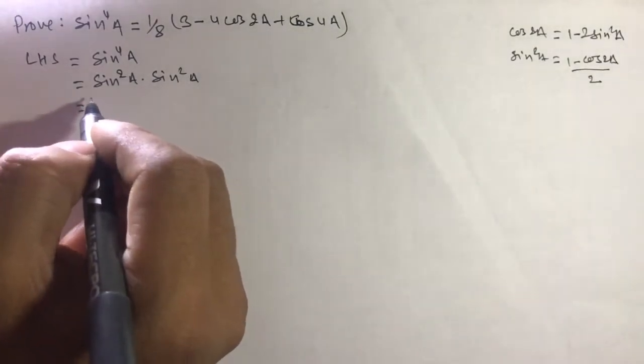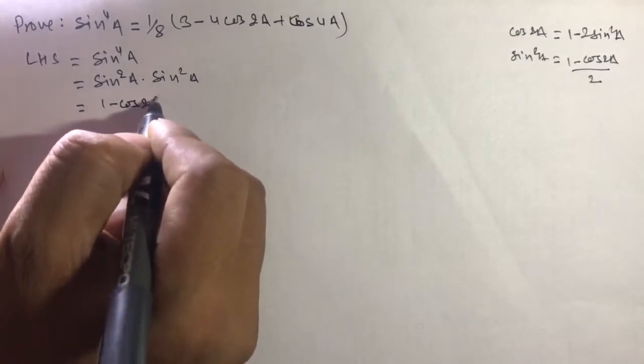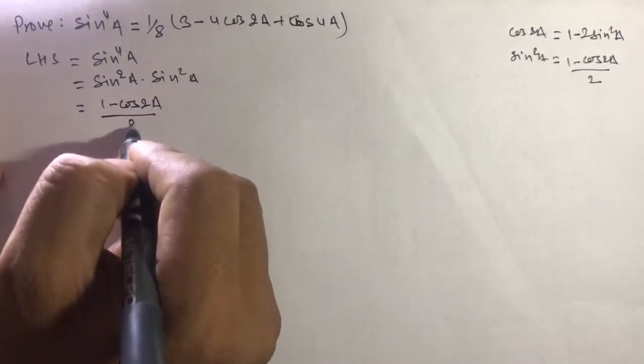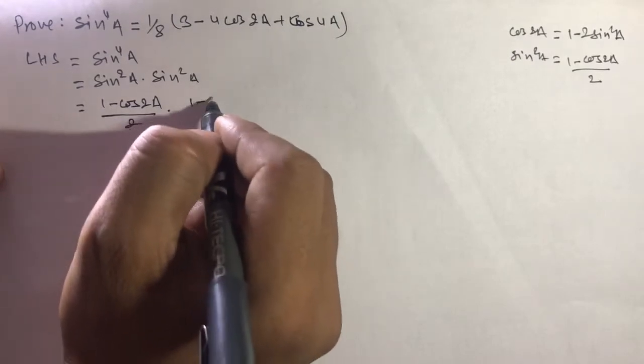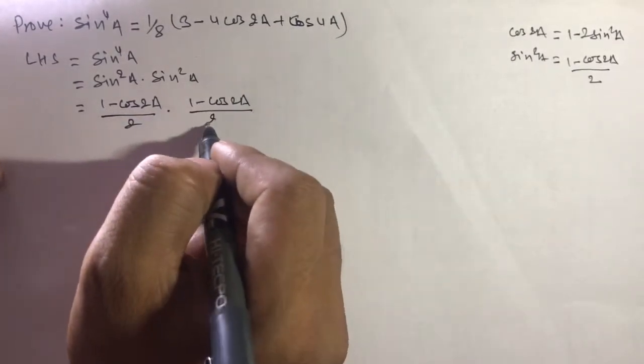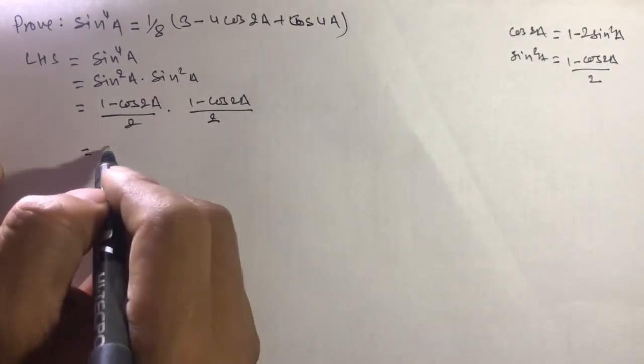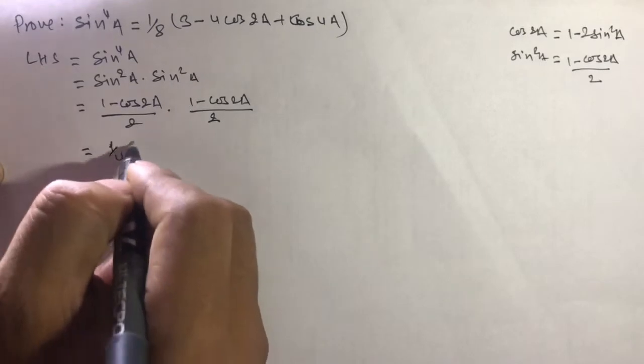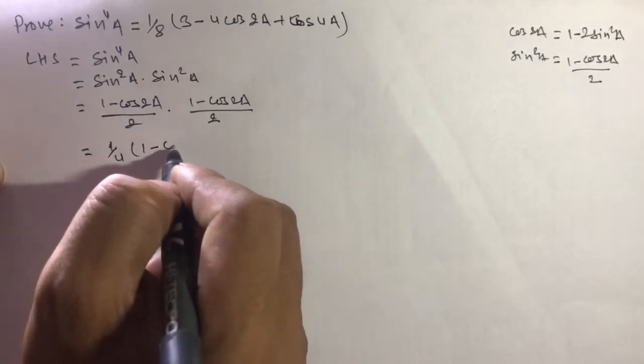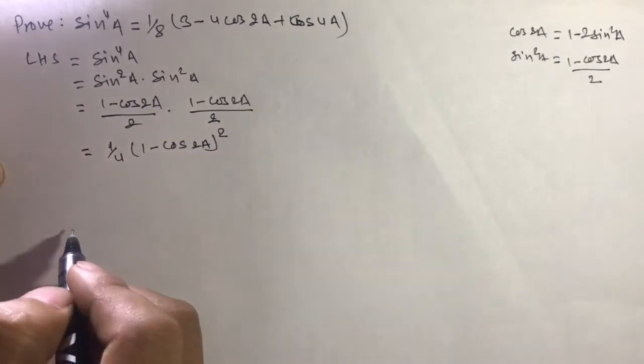Then we can write sin²a as (1 - cos 2a)/2 times (1 - cos 2a)/2. By multiplication, 1/2 times 1/2 gives 1/4, and we get (1 - cos 2a)².